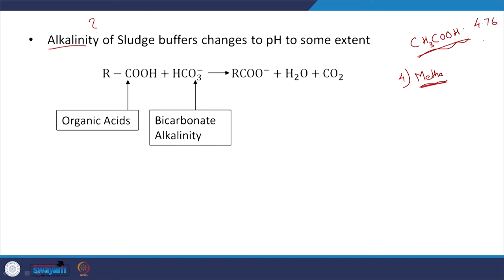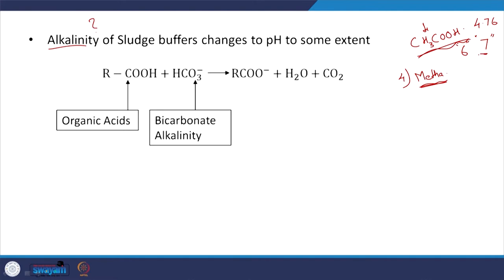Acetic acid can bring down the pH, depending on concentration, from neutral pH to maybe 6 or so. As we looked at in the previous session, methanogens — which are key to this process — will be adversely affected when the pH is 6.5 or so. So you want to control this particular anaerobic digester from turning sour. We do not want the digester to turn sour.